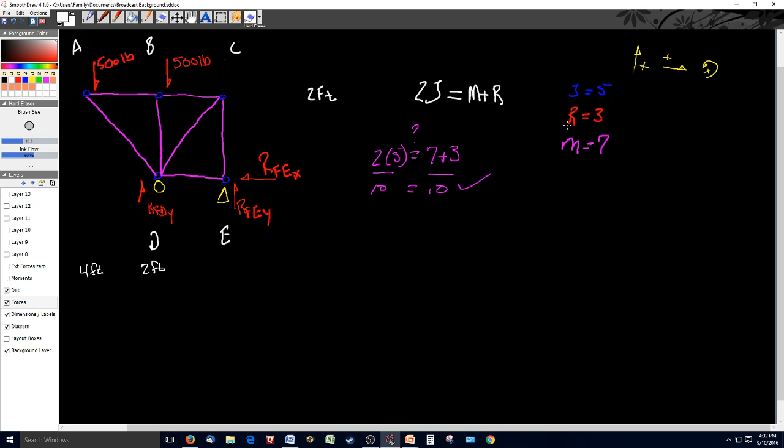R is the number of reactionary forces created by the supports. So I've got a single reactionary force at D and two at E by virtue of the pin. Then in purple, the number of members, and there are seven members in this truss system. So we write that equation and we say, does 2 times 5 equal 7 plus 3? The answer is yes, so it's determinant.